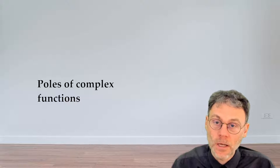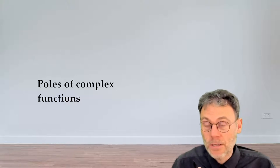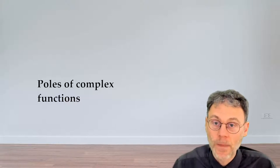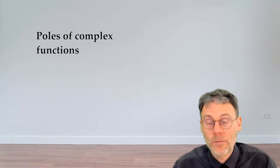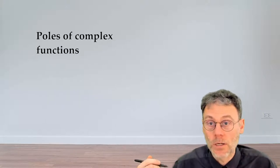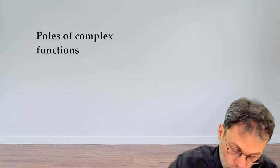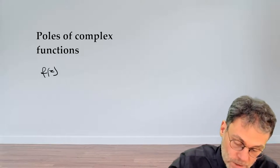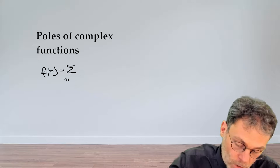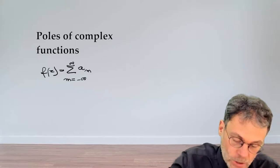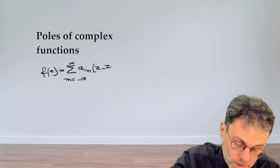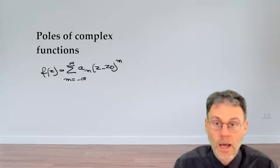So how can we figure out if a certain function has a pole type of singularity at a point z0? Well, what we should do is develop that function in a Laurent series around that point z0. So we're going to write down f is the sum of m going from minus infinity to plus infinity, a sub m times z minus z0 to the power of m.